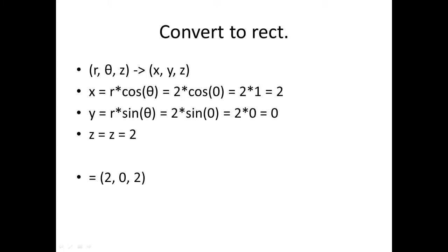We have an R, a theta, and a Z. R is going to be 2, theta is going to be 0, and Z is going to be 2. We're going to convert that into X, Y, and Z using these two equations: X equals R times cosine theta, and Y equals R times sine theta. We can just plug our R's and theta's in to solve for X and Y.